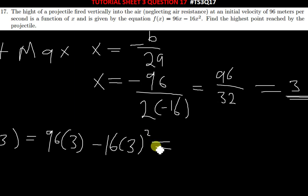This is in seconds, three seconds. And then 96 multiplied by 3 is 288. So 288 minus, this is 3 squared to give us 9, and then 9 times 16 is simply 144.